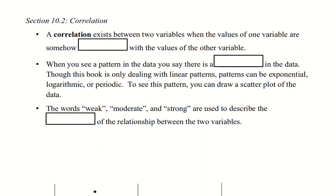Okay, welcome to section 2. We're talking about the strength of the correlation. A correlation exists between two variables when the value of one variable are somehow associated with the value of another. When you see a pattern in the data, you say there is a correlation in the data.